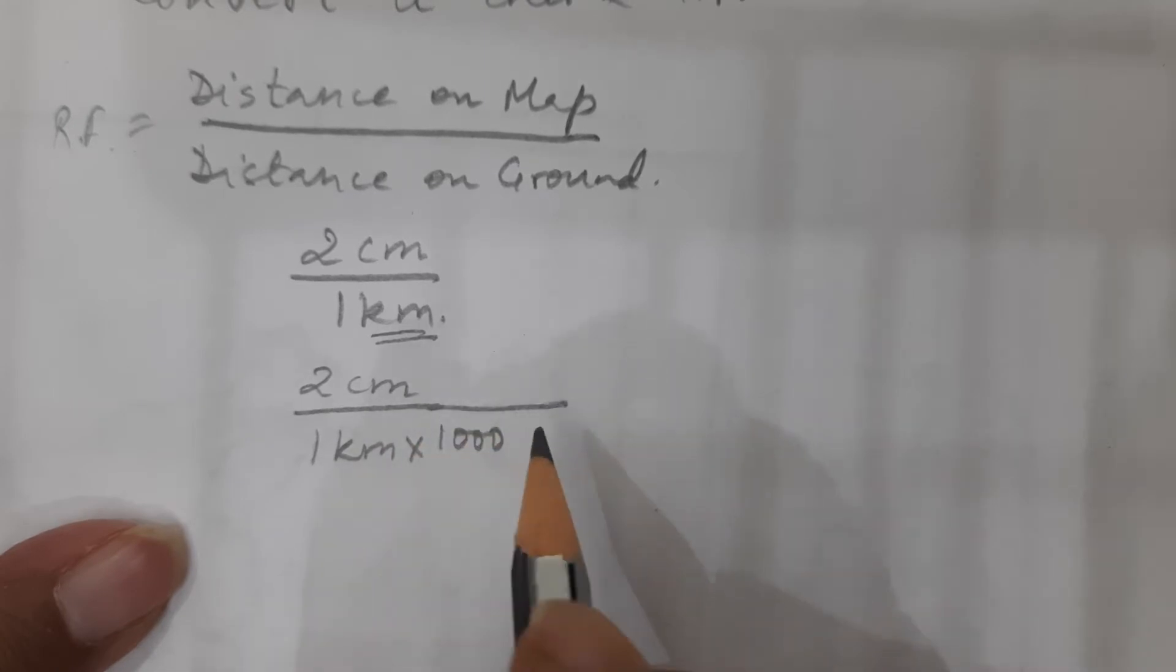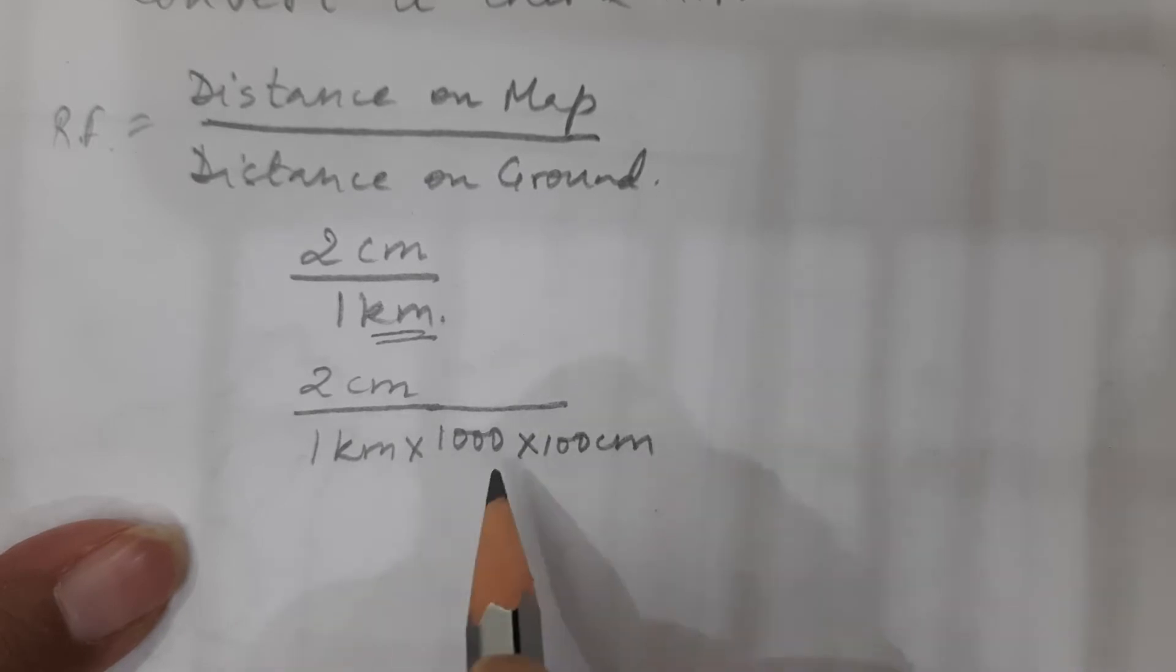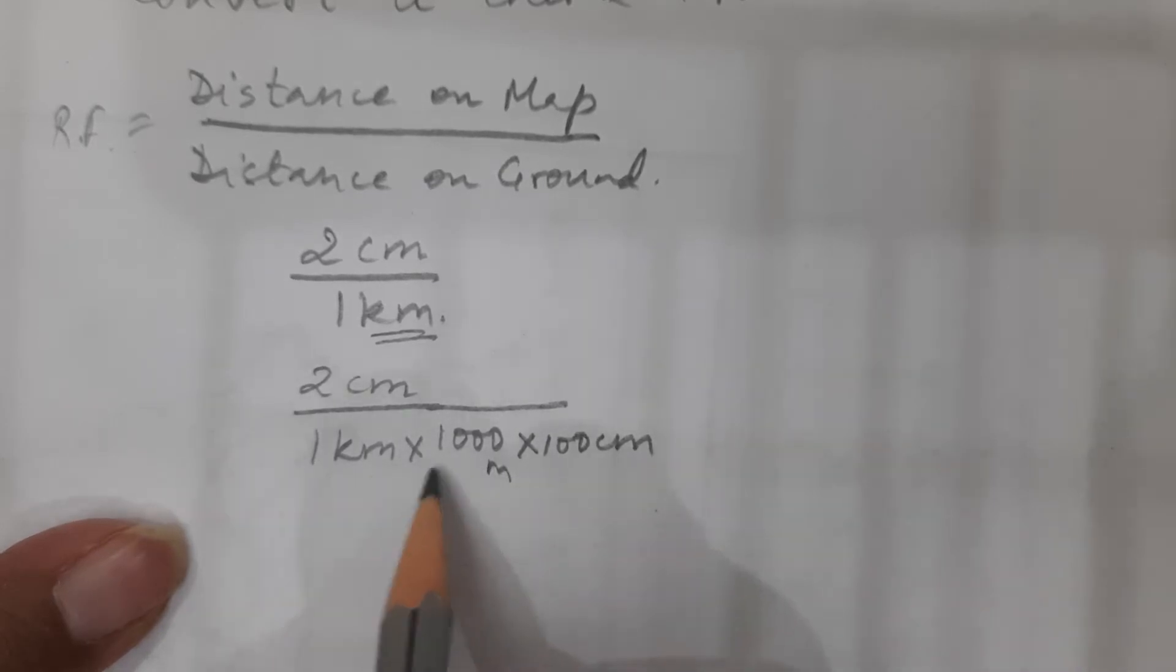So we know that in 1 meter there are 100 centimeters. So this is 1 kilometer into 1,000 meter into 100 centimeter. So what do I get? 2 centimeter upon 1 into 1,000 into 100 and so I get 100,000 centimeters.